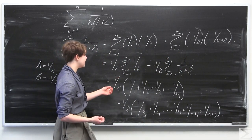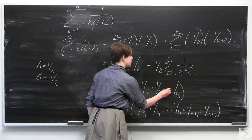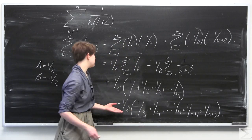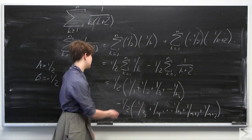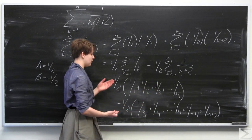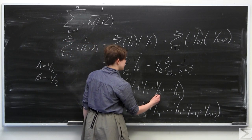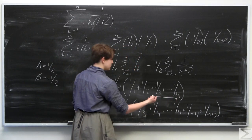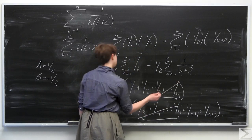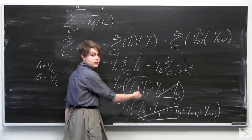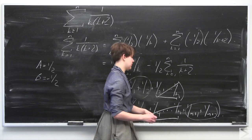We now have a telescoping sum. The common terms — 1 over 3 through 1 over n — appear in both sums with opposite signs and equal constants, so they cancel. What remains is 1 over 1 plus 1 over 2 from the first sum, and 1 over n plus 1 plus 1 over n plus 2 from the second.